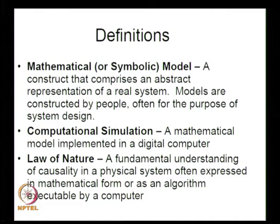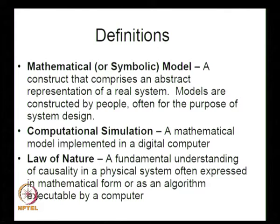The computational simulation is basically a mathematical model converted for use in a computer where you can get the outputs. The law of nature — a fundamental understanding of causality in a physical system — is often expressed in mathematical form or as an algorithm executable by a computer. Whenever we make the model, we need to follow the fundamental understanding of causality in the physical system — what causes the system to behave in a particular way comes from the physics behind the dynamics or the system behavior.